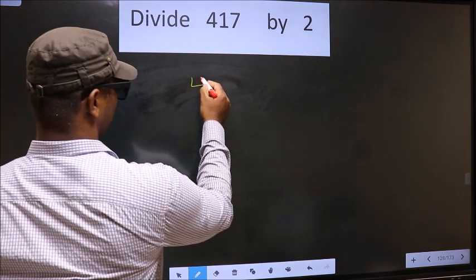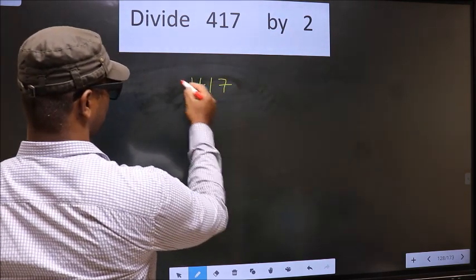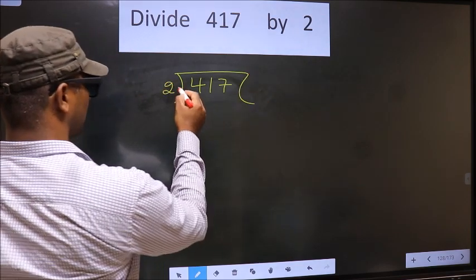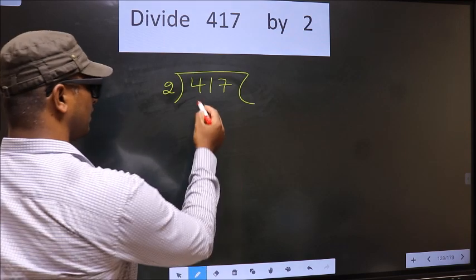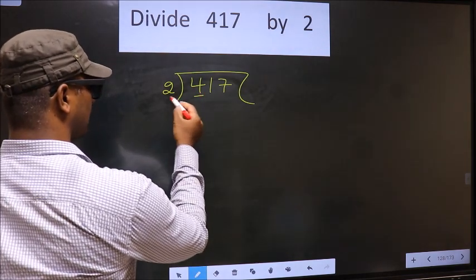That is 417, 2 here. Okay, next. Now here we have 4, here 2.